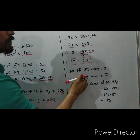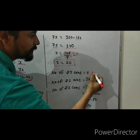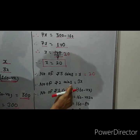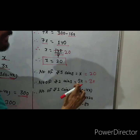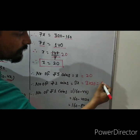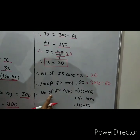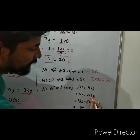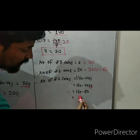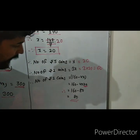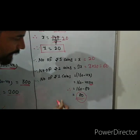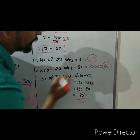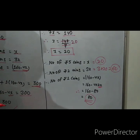Therefore the number of 5 rupees coins is x equals 20. Number of 2 rupees coins is 3x equals 3 into 20 equals 60 coins. And the number of 1 rupees coins is 160 minus 4x equals 160 minus 80 equals 80 coins. These are the solutions of this word problem.